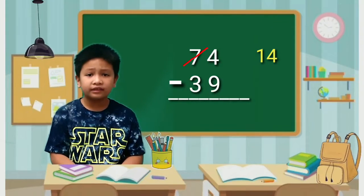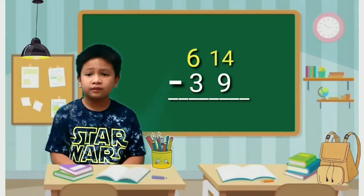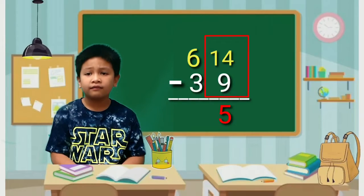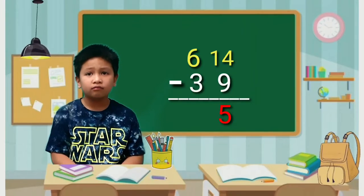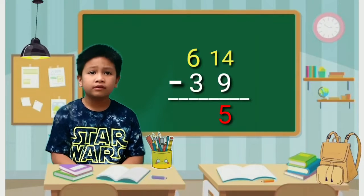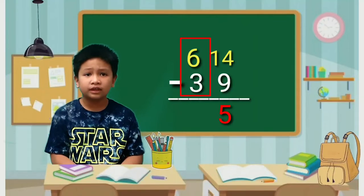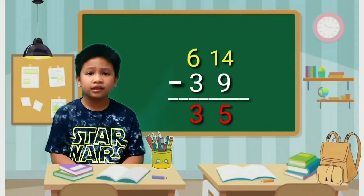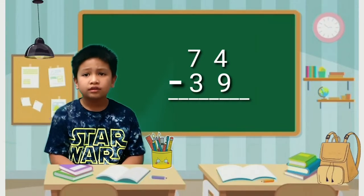And 7 tens will become 6 tens. Subtract: 14 minus 9 equals 5. After subtracting the 1s digits, we can now subtract the 10s digits. Subtract: 6 minus 3 equals 3. Therefore, 74 minus 39 equals 35.